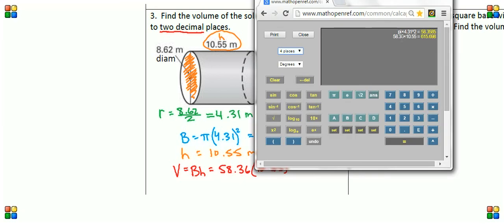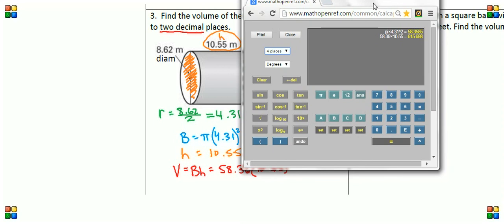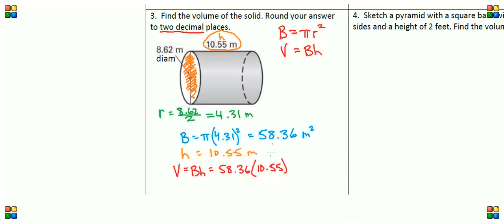58.36 times 10.55 is equal to 615.698, which we can round. Now the 8 makes the 9 round up which goes to 0, which makes the 6 round up to 7. So our rounded answer is 615.70.